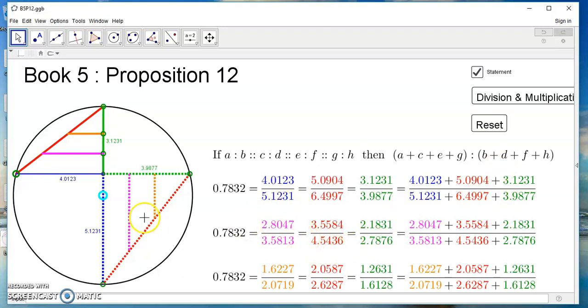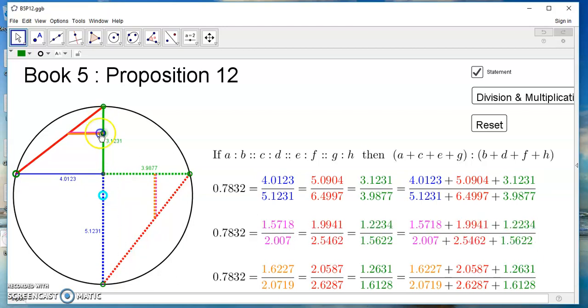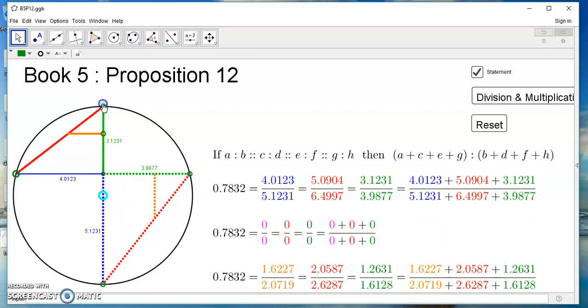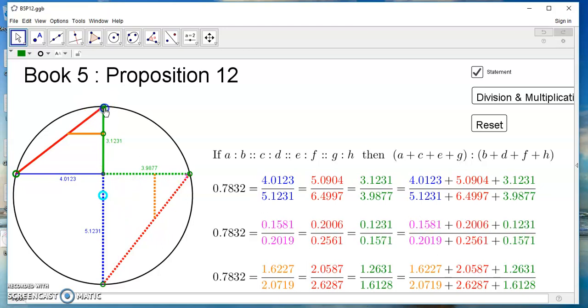OK, so if Euclid had used similar triangles, as you see over here in a circle, then you could see the truth of this proposition simply by varying the similar triangles and seeing that. And of course, by the way,